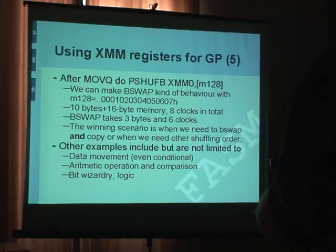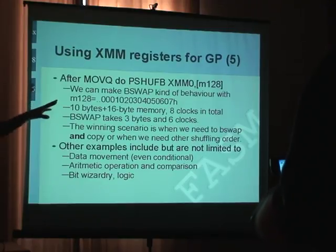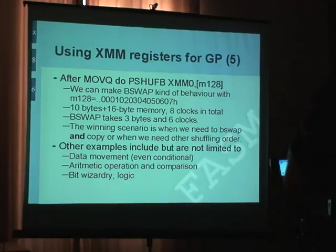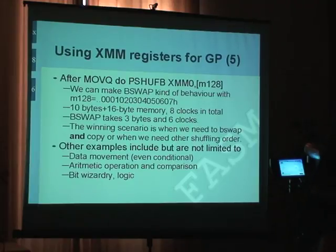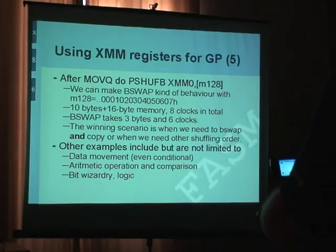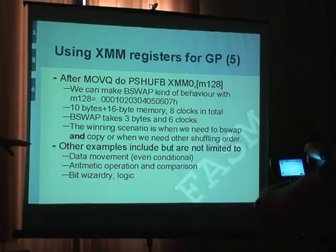But like with the last example, a lot of memory usage — you need a 16-byte memory region where you hold the shuffle algorithm, how to shuffle it. And you need 10 bytes for the instruction itself. But if you don't care about memory because memory is free today, then it's nothing to worry about — only a little more clocks. It's 8 versus 6 clocks with a byte swap. But if you do a lot of these, the latencies will hide and you will get efficiency of about 6.5 clocks per byte swap.